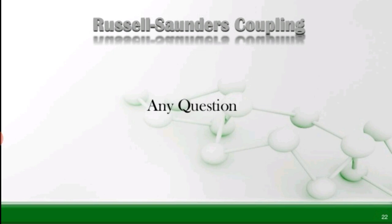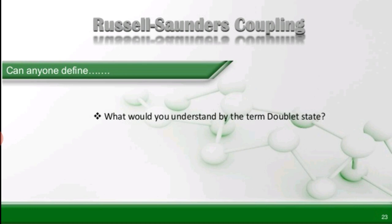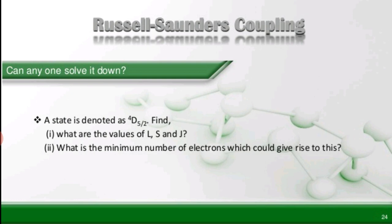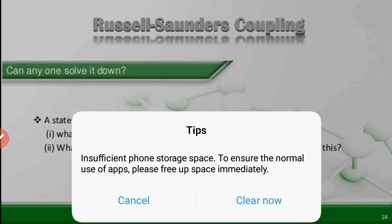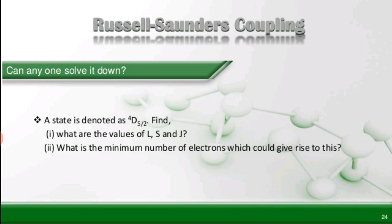If you have any questions, you can comment below. Can anyone define what you would understand by the term doublet state? And another question: a state is denoted as 4D_(5/2) — what are the values of L, S, and J? And what is the minimum number of electrons which could give rise to this state? You can solve this, and if you have any problem, you can comment. So this is all for today's video. Thank you.